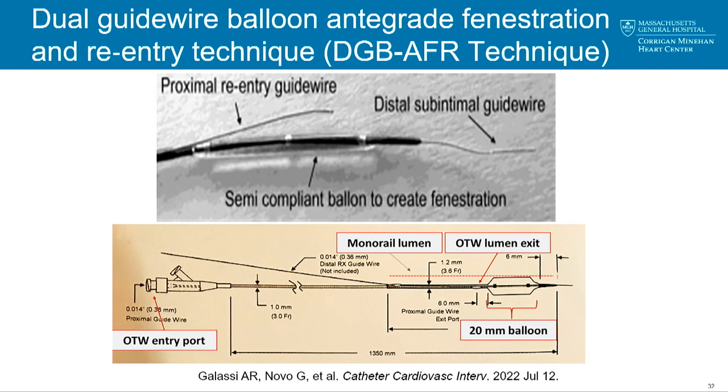One of the most controversial topics in CTO PCI is antegrade fenestration re-entry (AFR), which involves dilating a balloon in the subintimal space, creating fenestrations within the subintimal space connecting to the true lumen, and then using a polymer-jacketed wire to re-enter the true lumen. It usually requires two systems.